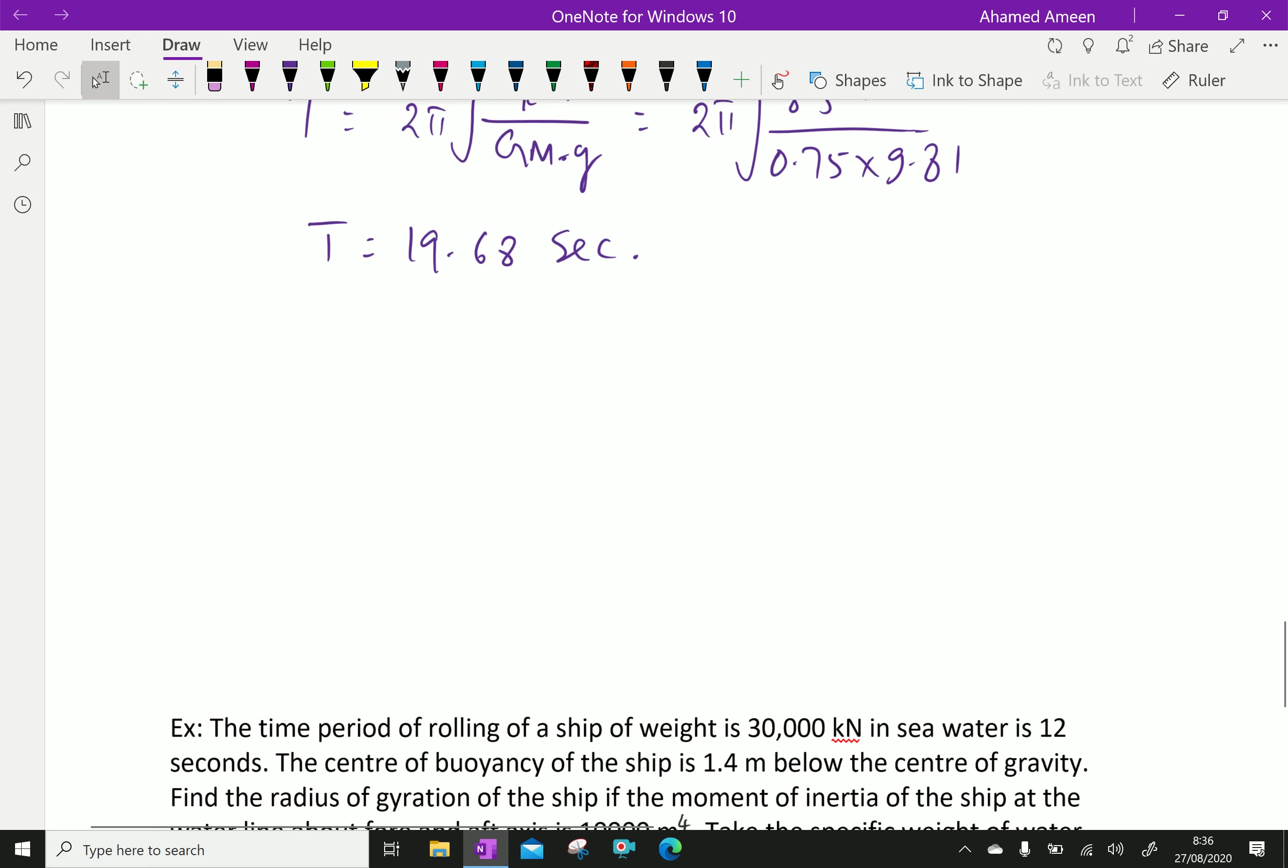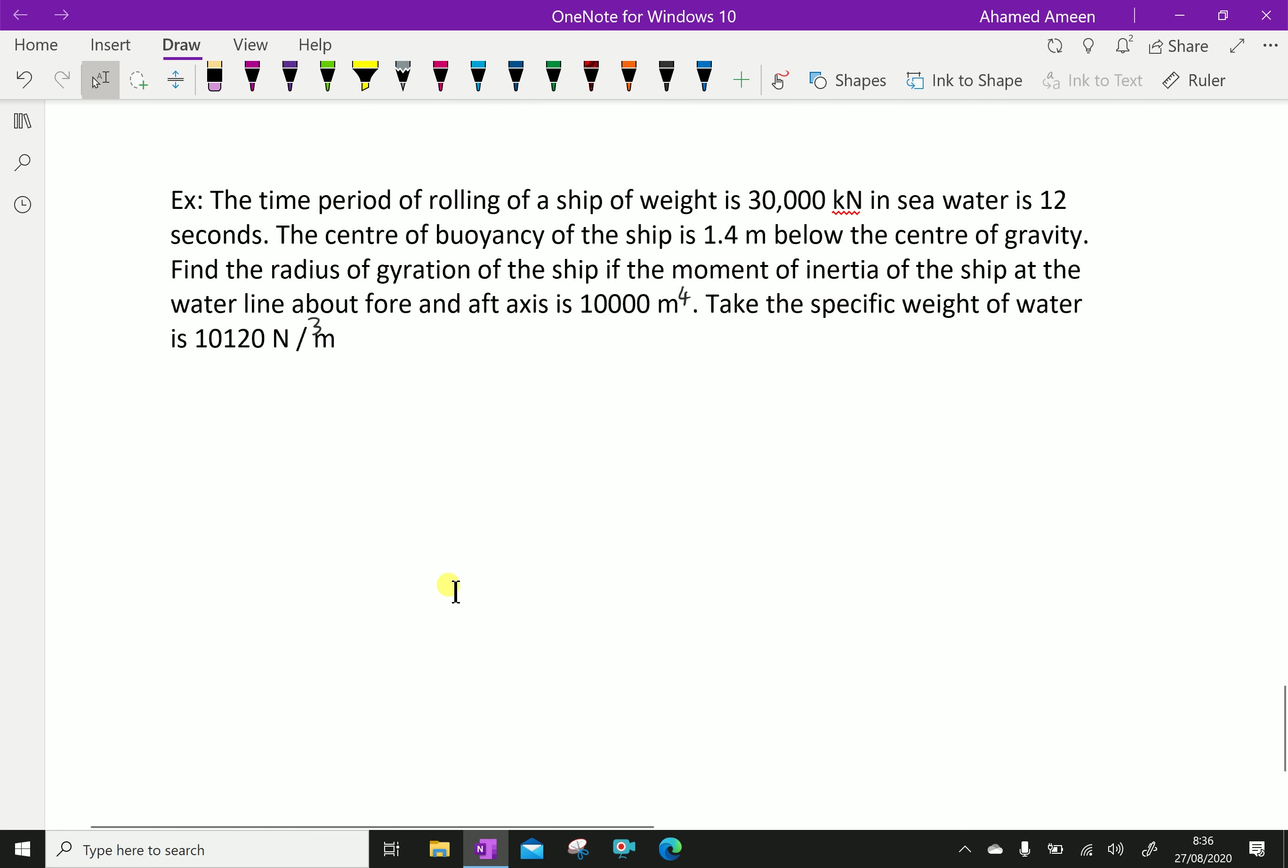Now, let us do the next question. The time period of rolling of a ship of weight 30,000 kilonewton in seawater is 12 seconds.